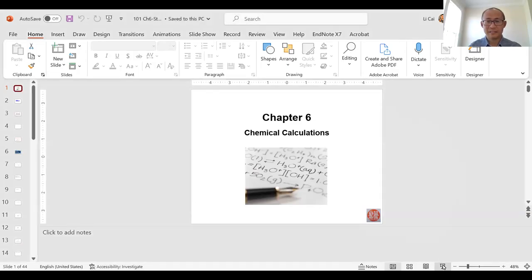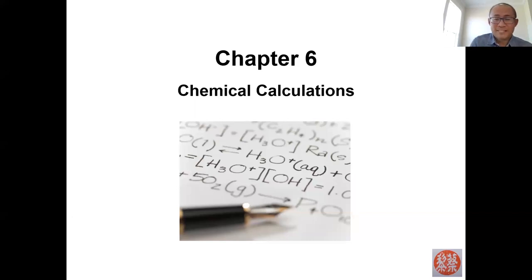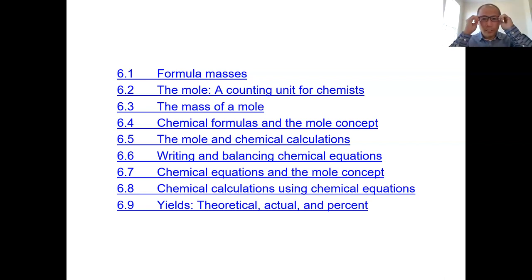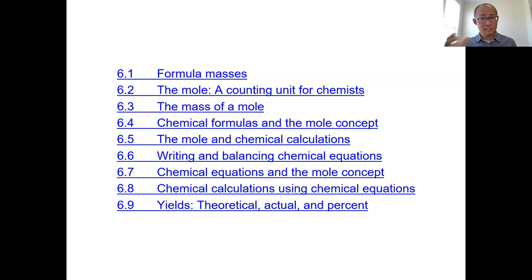Hi everyone, welcome back. I'm continuing here with Chapter 6, which is the chapter where we include most of our chemical calculations. In this chapter, not only are we going to talk about what chemistry calculation is about, but we're also going to calculate all kinds of chemical amounts, relate that to chemical equations, reactants and products, and talk about reaction yields.